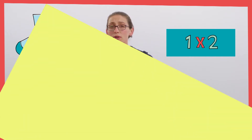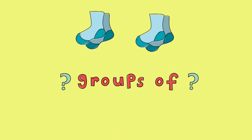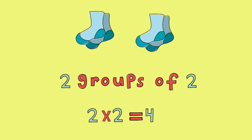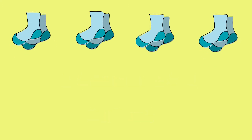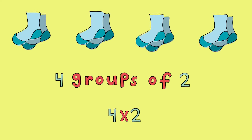So let's think about it. What if we had two pairs of socks? How would we represent that? We could say two groups of two, or two times two. How can I find the total number of socks? I can count by twos: two, four. Now what about four pairs of socks? Exactly — we could have four groups of two, or four times two. So how many all together? Count with me: two, four, six, eight.